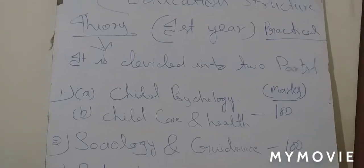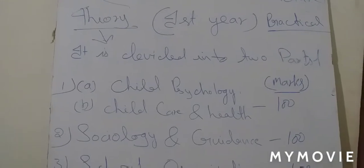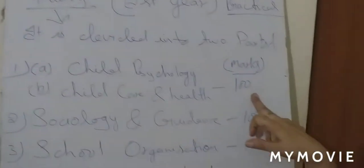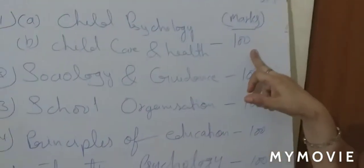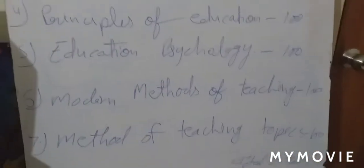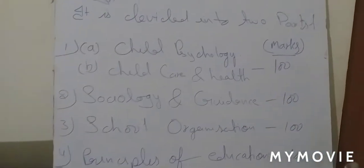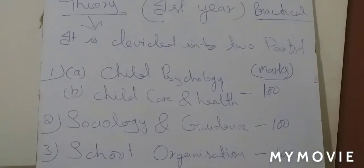In theory work, each paper has 100 marks and the total is 700, and in your mark sheet you get marks from 700.